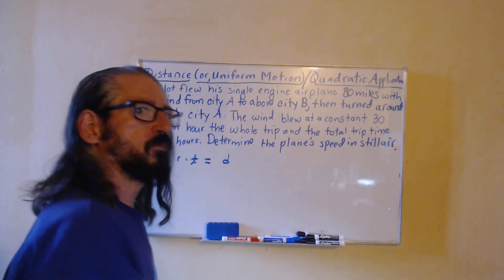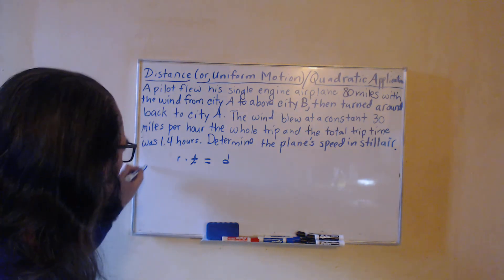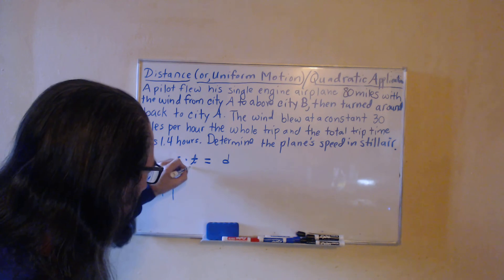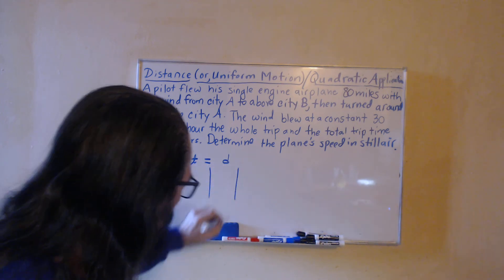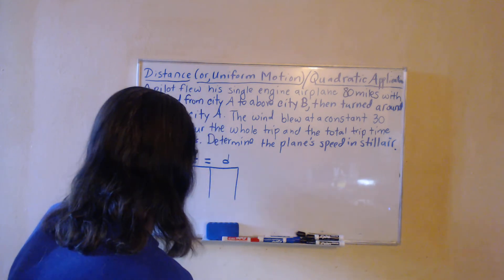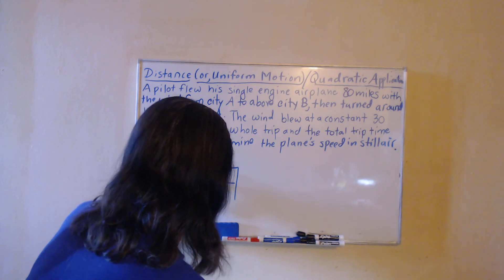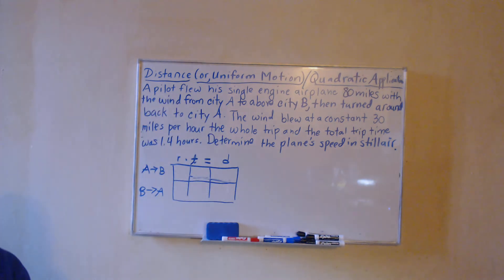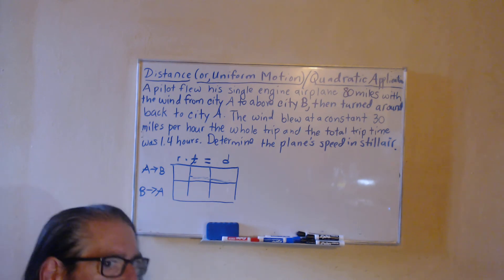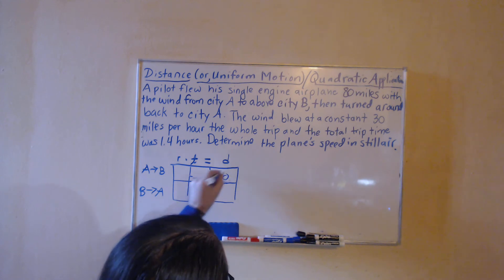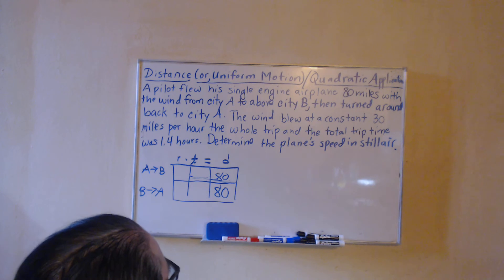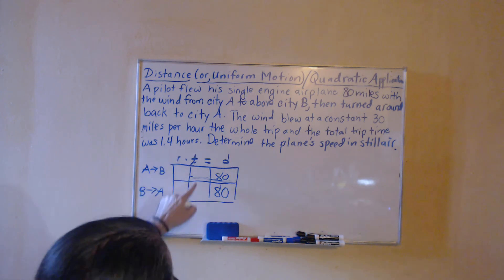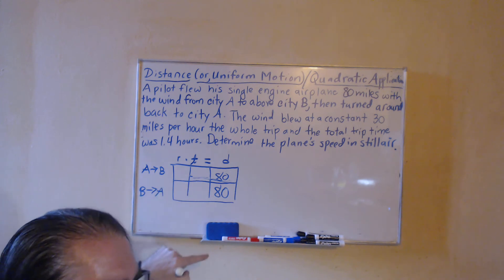We have our trip from city A to B and then back from B to A, and set up the table here with the formula as the headers for the columns while which portion of the trip is making up the rows. In both cases we have the same distance of 80.